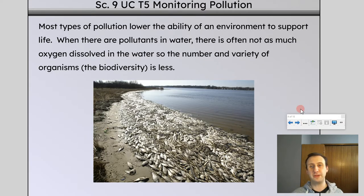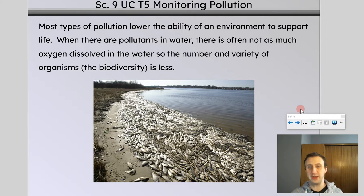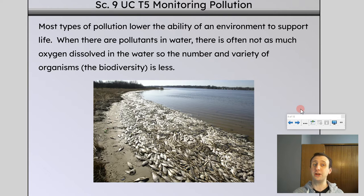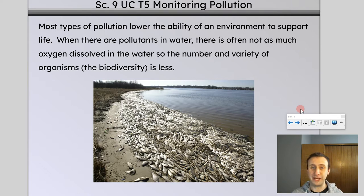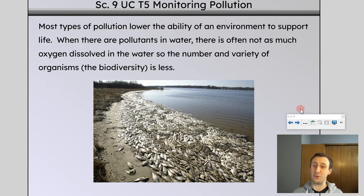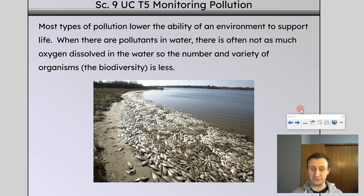Most types of pollution lower the ability of an environment to support life. When there are pollutants in water, there is often not as much oxygen dissolved in the water, so the number and variety of organisms — the biodiversity — is less. We're going to focus a lot on oxygen today and its effects on aquatic ecosystems. Oxygen is important to a lot of life; fish, for example, need oxygen dissolved in the water to survive.